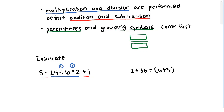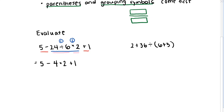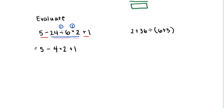So this is going to be the same as 5 minus — the first thing we do is 24 divided by 6, and 24 divided by 6 is 4. So we've got 4, and we haven't done anything with the 2 on the right yet, so we still have times 2, and then plus 1. Next, we still need to perform this multiplication: 4 times 2 gives us 8, and so we have 5 minus 8, plus 1.